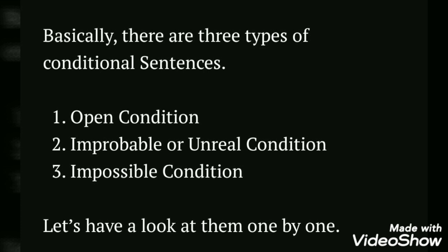The conditional sentences, which are called if sentences, are of three types. First one is open condition, which has two parts: one is called future sentences and one is called zero condition. Second is improbable or unreal condition — also called doubtful condition — where you have doubt. Third one is impossible condition, where we talk about sentences which are impossible. So, conditionals can be divided into three parts: open condition, improbable or unreal condition, and impossible condition. Let's have a look at them one by one.